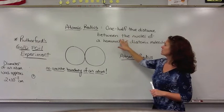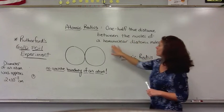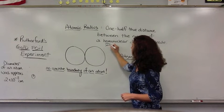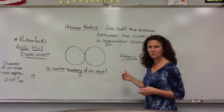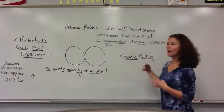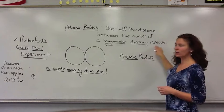So one half the distance between the nuclei of a homo, meaning the same, nuclear, so we have the same type of nucleus, di, meaning two atoms that are making up the compound.